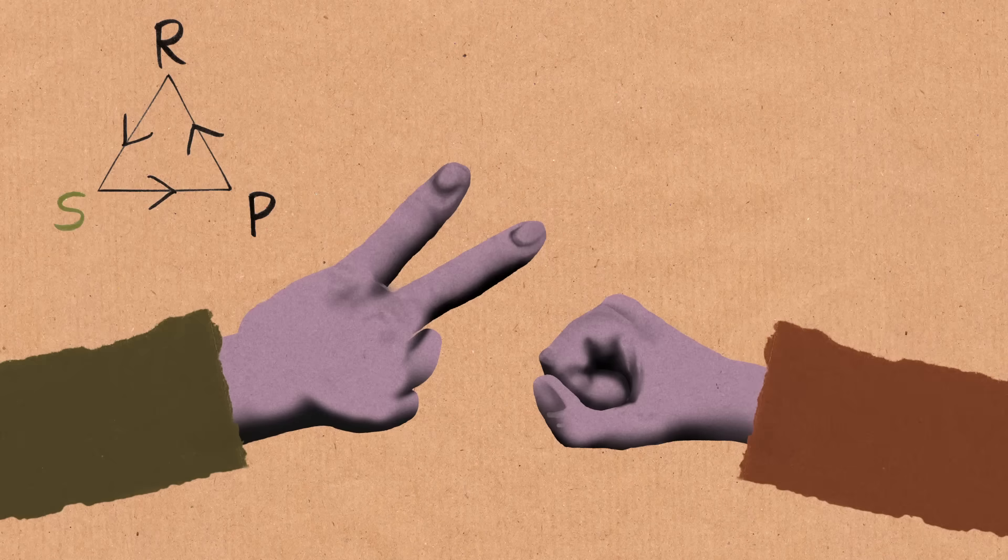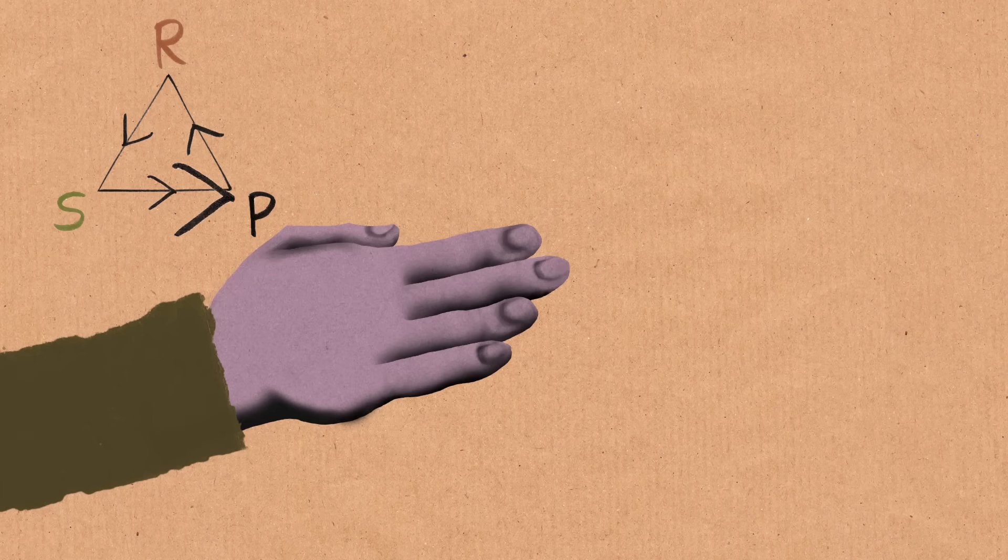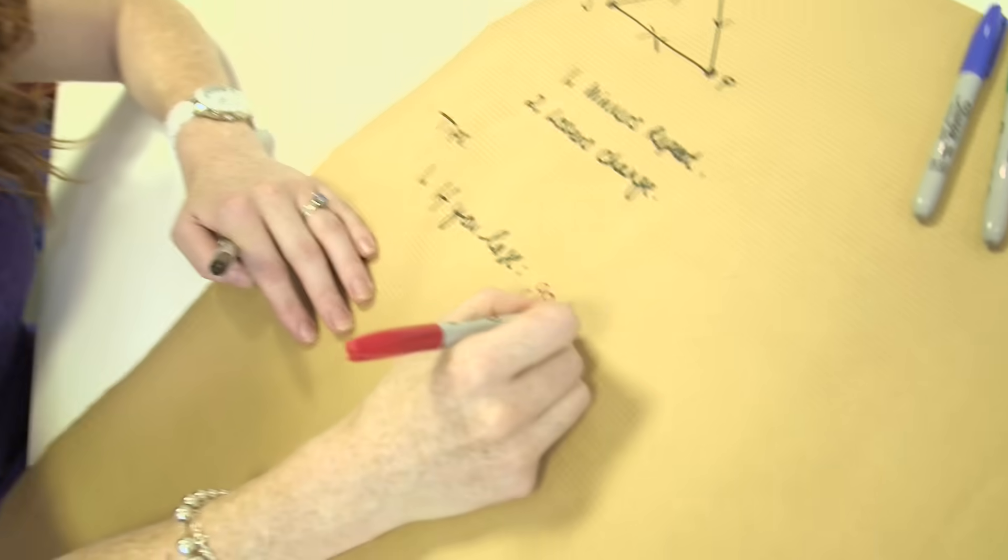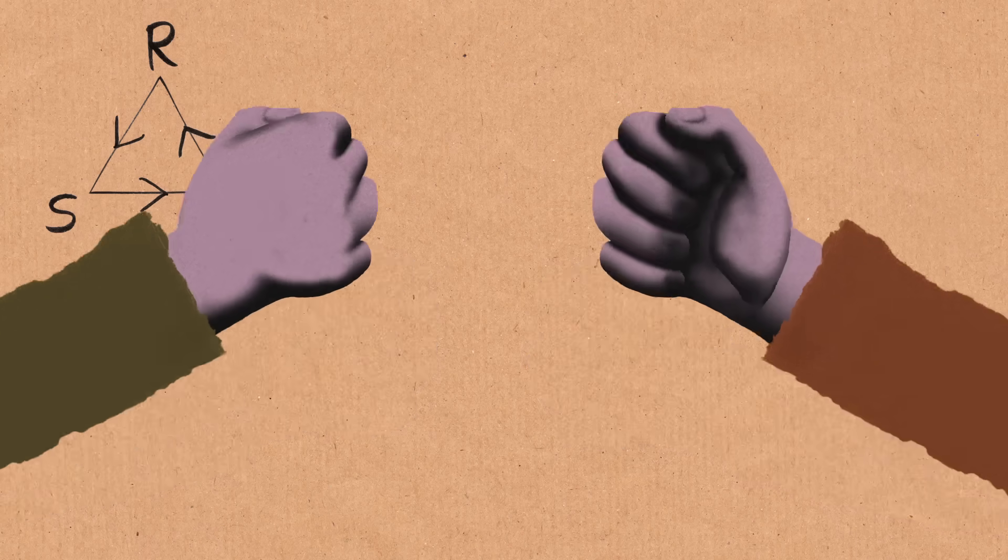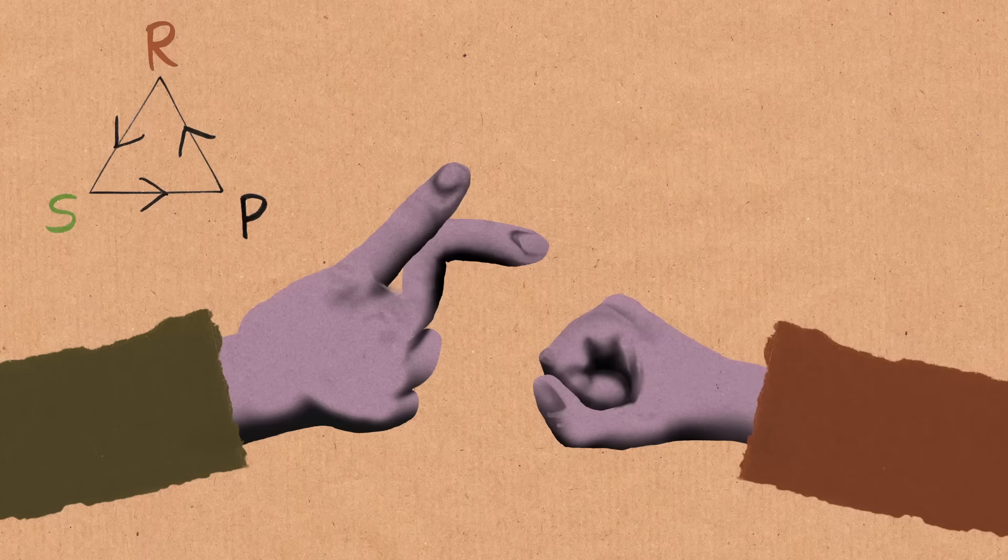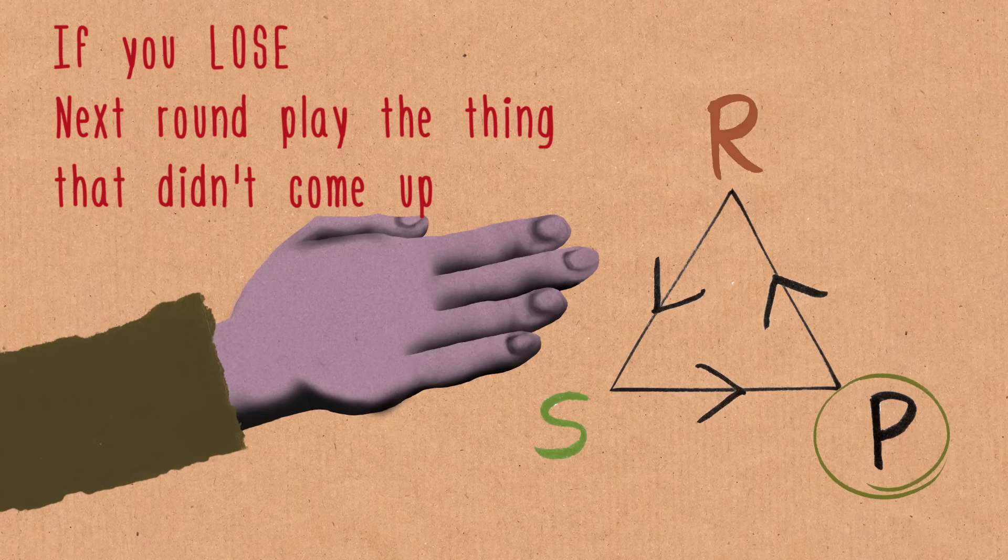Let's imagine that you played scissors, the other person played rock. What you should do is you should go backwards round this triangle and play paper the next time, because there's a high chance that they're going to play rock again. So that's the first thing, go backwards. Or another way to say it is essentially you've just played scissors, they've played rock, so play the thing that didn't come up in that if you lose.